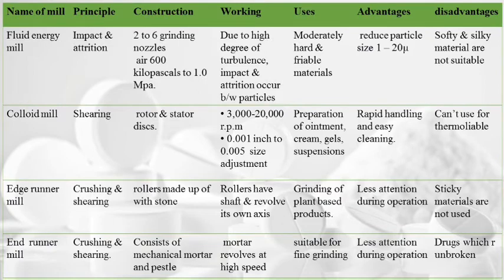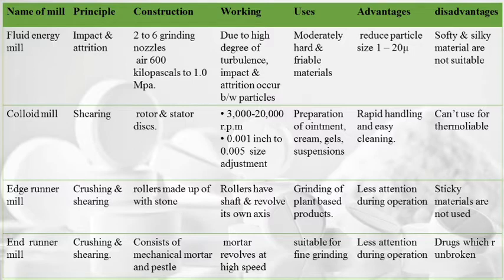Fluid energy mill works on impact and attrition; has two to six grinding nozzles; air at 600 kPa to 1 MPa is introduced creating high turbulence; particles are reduced up to 1–200 microns; not used for soft and sticky material. Colloid mill works on shearing; rotor disc rotates at 3,000–20,000 rpm; distance between rotor and stator disc maintained at 0.001–0.005 inch; used in preparation of ointments, creams, gels, and suspensions; rapid handling and easy cleaning; cannot be used for thermolabile substances.